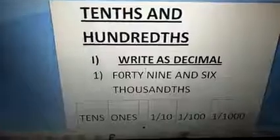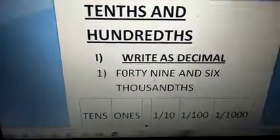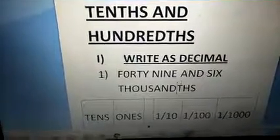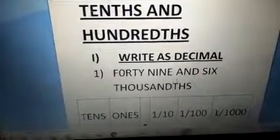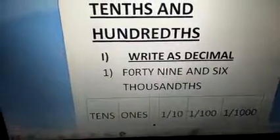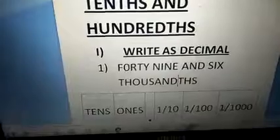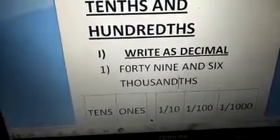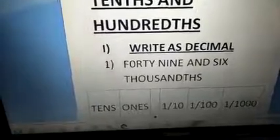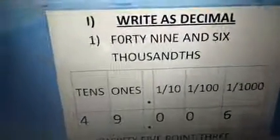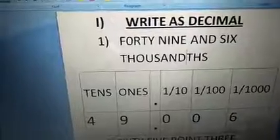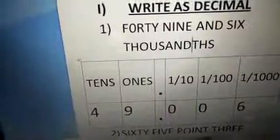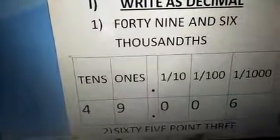I have given the number name 49 and 6000. So we see the number name — first you have to draw the place value chart. I have given 49, children, so only I take in the place value chart once and tenths column only.